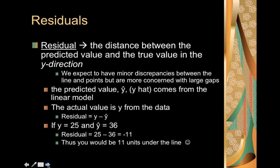For example, if y is 25 and y hat is 36, your residual is 25 minus 36, which is negative 11. And therefore you would end up being 11 units under the line. So a negative residual tells you you're under the line, and a positive residual will tell you you are above the line.